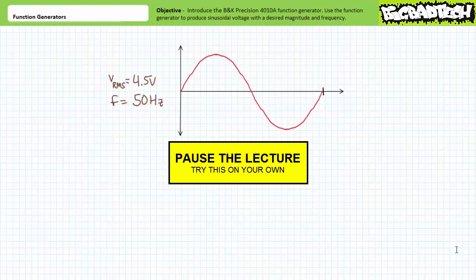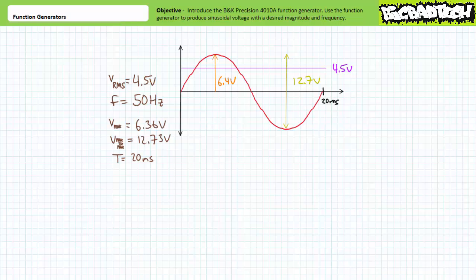If you're tracking, you should have obtained the following values. An effective or RMS value of 4.5 volts is roughly equivalent to a peak value of approximately 6.4 volts and a peak-to-peak value of approximately 12.7 volts. A frequency of 50 hertz corresponds to a period of 20 milliseconds. If we assume this is our reference waveform, we could say it has a phase shift of 0 degrees. Substituting these values into the time-variant voltage waveform formula, we arrive at V of T equals 6.4 volts times the sine of 360 times 50 times the time of interest. Our goal is to use the BK Precision 410A function generator to produce this exact same time-variant voltage waveform.